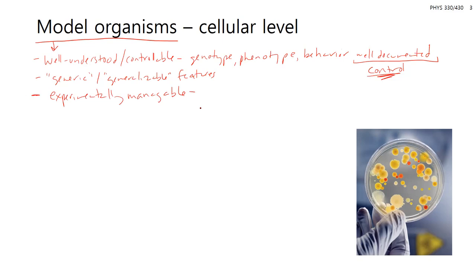Another aspect of model organisms is that they're 'experimentally manageable.' For example, if you want to do microscopy, your cells have to be optically transparent — and not all cells are. You need something thin enough or within the Z-focus range of your objectives. Other experiments might require cells that interact with a specific type of surface, so you'd select a different cell type.